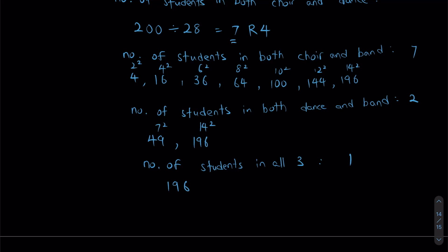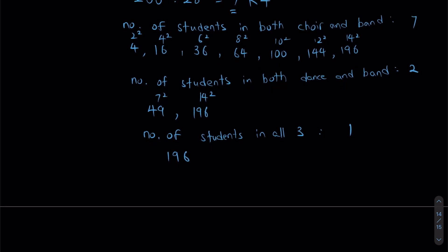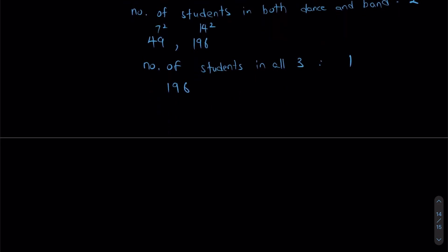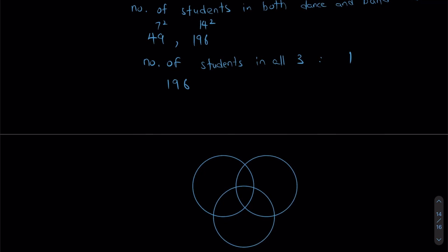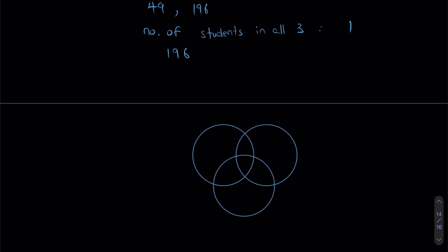We realize that there's quite a lot of overlapping of information going on here. So, it's probably best that I draw a Venn diagram. Because that will really help me to visualize my information better. So, this is what the Venn diagram is going to look like. I'm going to have 3 circles. This is how I'll label it. I'm going to label this as choir. I'm going to label this as dance. I'm going to label this bottom one as band.